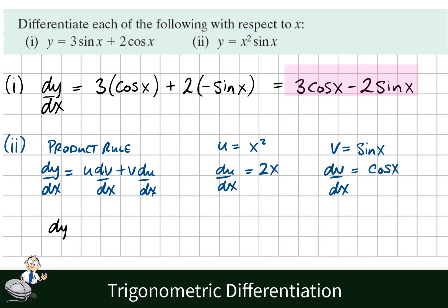Now we just sub these values into the formula. So dy dx becomes u, which is x squared, multiply by dv dx, cos x, plus v sin x, times du dx, 2x.